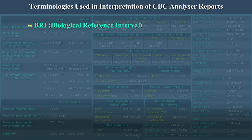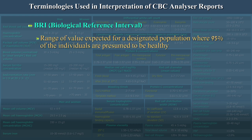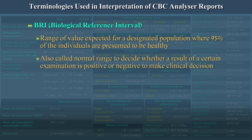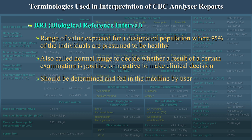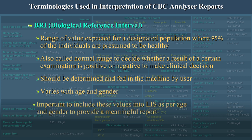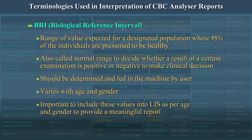Biological Reference Interval, i.e. BRI. It is a range of values expected for a designated population where 95% of the individuals are presumed to be healthy. This is also called the normal range, used to decide whether a result is positive or negative to make a clinical decision. It should be determined and fed in the machine by the user. The BRI varies with age and gender, and it is important to include these values into your LIS as per age and gender to provide a meaningful report.